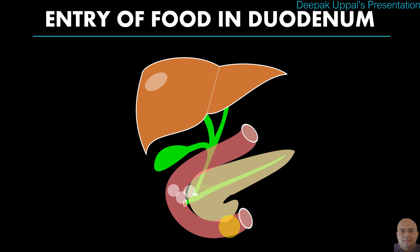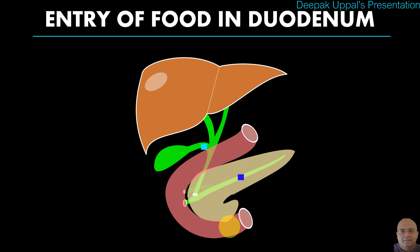Instance two: when fatty and proteinaceous food enters the duodenum, the mucosa or wall of the duodenum releases the hormone cholecystokinin-pancreosymin. This hormone causes the gallbladder to contract and release bile. Sphincters such as the sphincter of Oddi relax and open. It also causes release of pancreatic juice.